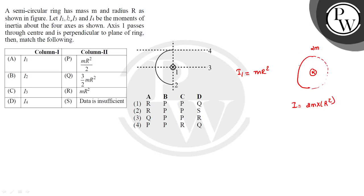This is symmetric. Now for just the semicircular ring, we remove half. The semicircular ring has half the mass, so its moment of inertia will be half: (1/2) × MR². So the moment of inertia of the semicircular ring about axis 1 is I1 = MR².